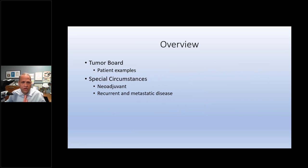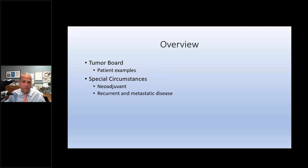No two cancers are alike, and even if they look alike under the microscope, they often can behave differently. So everybody's care is individualized and tailored. The overview here: I'll go through the tumor board, highlighting a couple of typical patients with different types of breast cancers and some special circumstances. We'll cover the concept of neoadjuvant therapy — some patients don't go straight to surgery, they may get chemotherapy and or radiation before surgery. We'll also discuss recurrent or metastatic disease and what that means for patients.